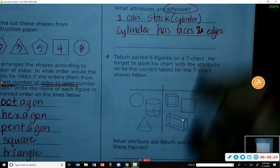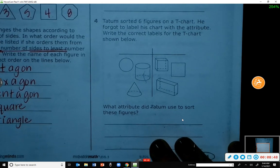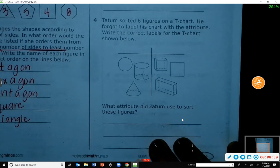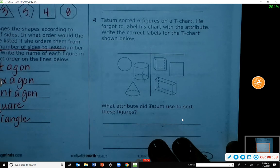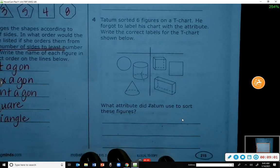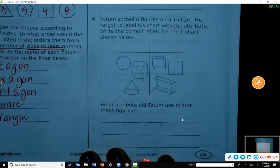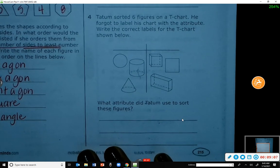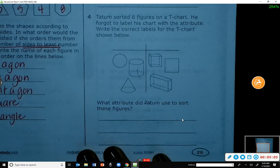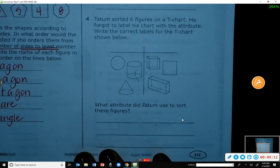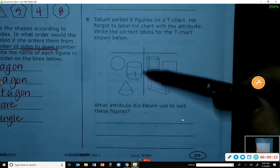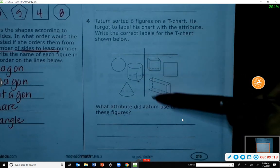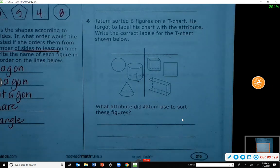Number four. Tatum sorted six figures on a T-chart. He forgot to label his chart with the attribute. Write the correct labels for the T-chart shown below. So I'm going to give you a second to look at these two sides. What attributes did Tatum use to sort those shapes? What do you see that this side has in common, and what does this side have in common?